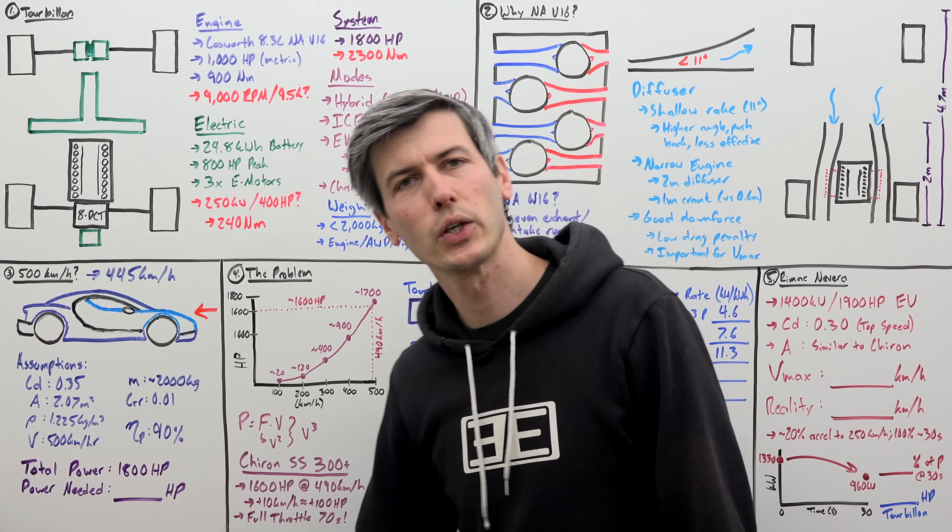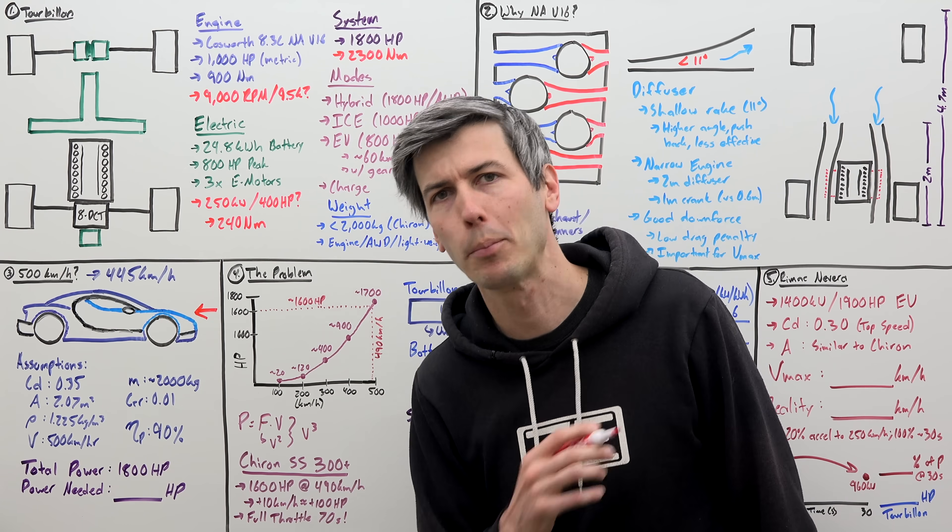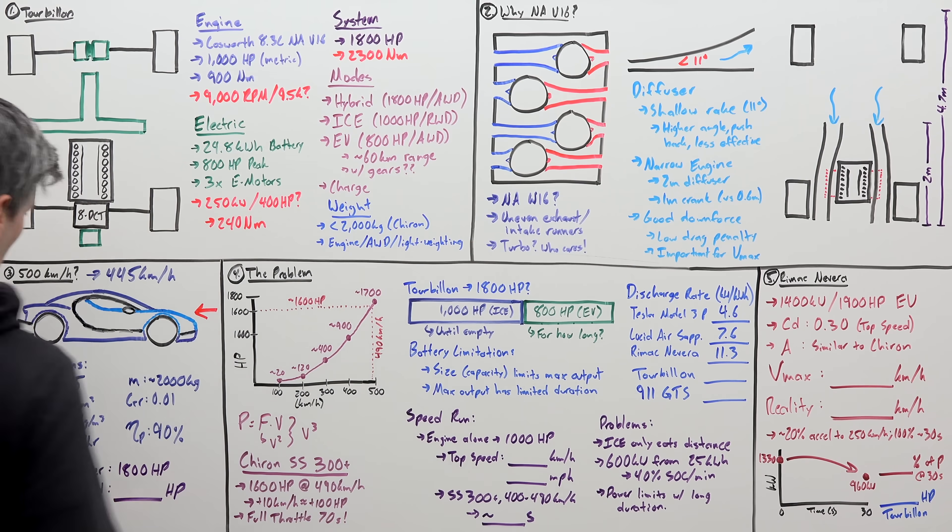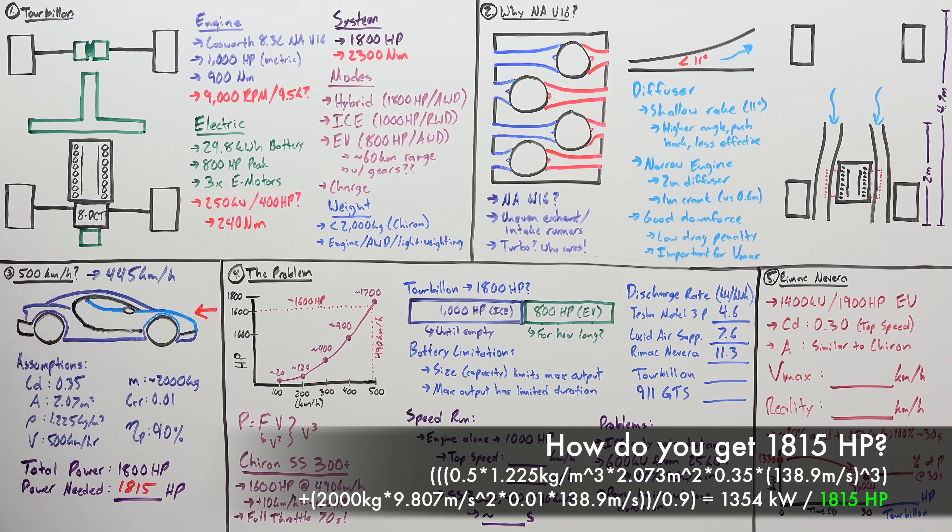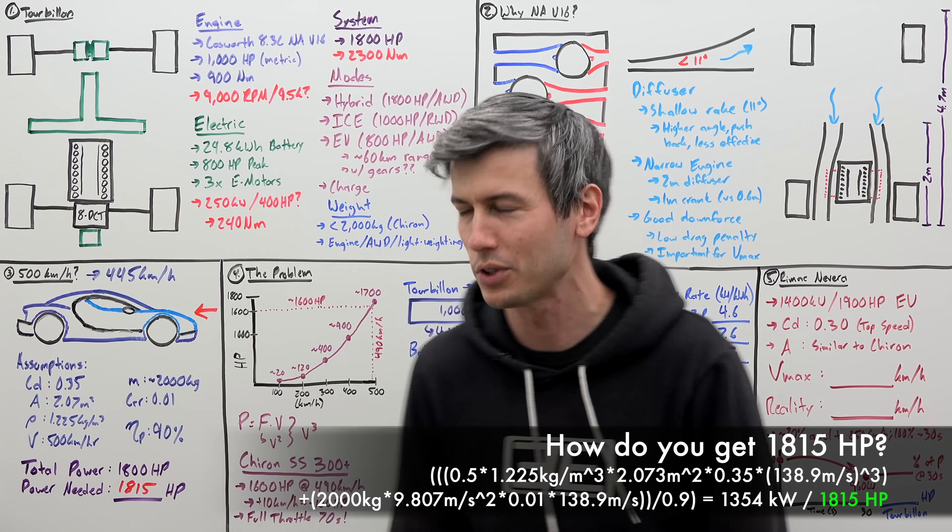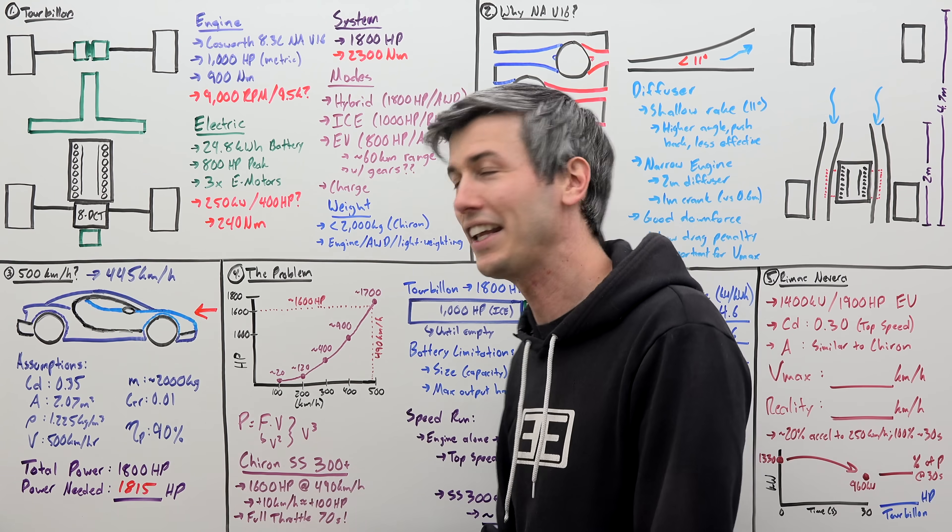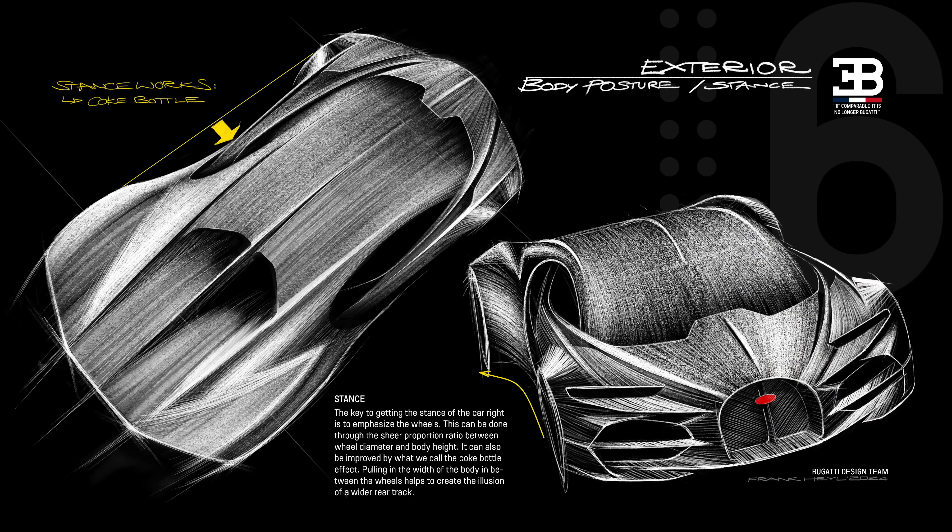And part of the reason for that is the open air, the exposed engine that you have in the back, which is increasing its drag coefficient. But it looks beautiful. So using as accurate of assumptions as I can come up with, we get a guesstimate of the total power output required for the Tourbillon to hit 500 kilometers per hour of about 1,815 horsepower. So super close to the actual number within the error range of these assumptions. So yeah, it has the power to do it. It can do it, right? Unfortunately, there's a pretty big problem here.